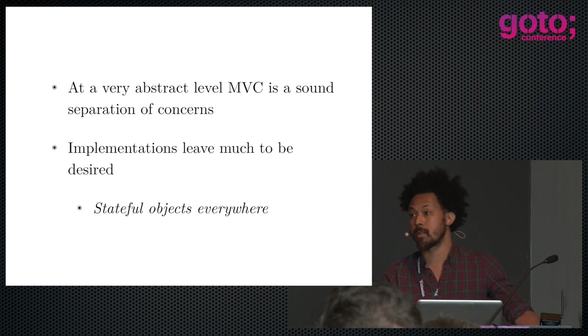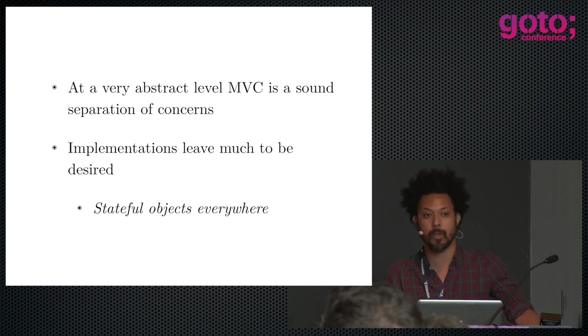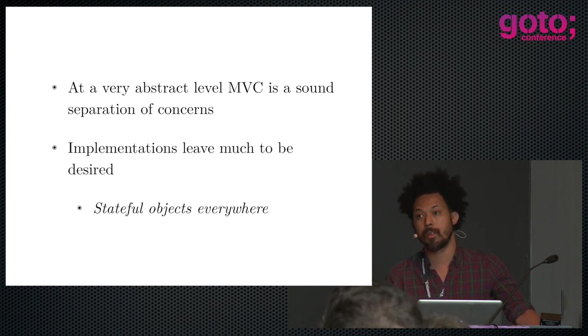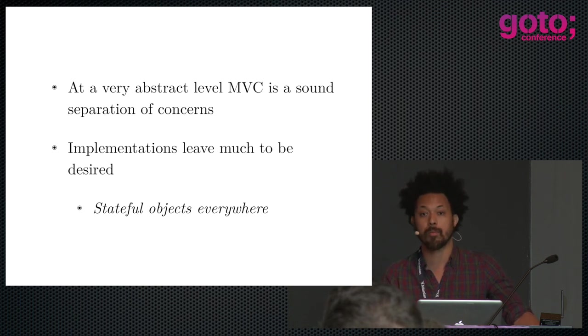At a very abstract level, MVC is very sound. You have some sort of data model representing the domain the user cares about. Users can't see data structures, so you need a visualization — that's the view. And often where things get extremely complicated is the controller: how do you coordinate what the user sees with the domain they want to manipulate, which you have represented in the machine. But I would argue implementations leave much to be desired. MVCs today are primarily designed around stateful objects. Object-oriented programming has this notion that you encapsulate state in objects, but even encapsulating state in objects has very serious problems — if you've done any multi-threaded programming, you are well aware of this.